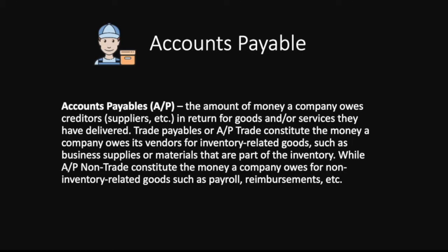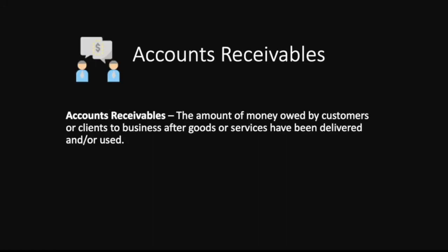Accounts payable is the amount of money a company owes to creditors in return for goods or services they have delivered. Trade payables constitute the money a company owes to its vendors for inventory-related goods such as business supplies or materials that are part of the inventory, while non-trade payables constitute the money a company owes for non-inventory-related goods such as payroll reimbursements or amounts payable to your employees.